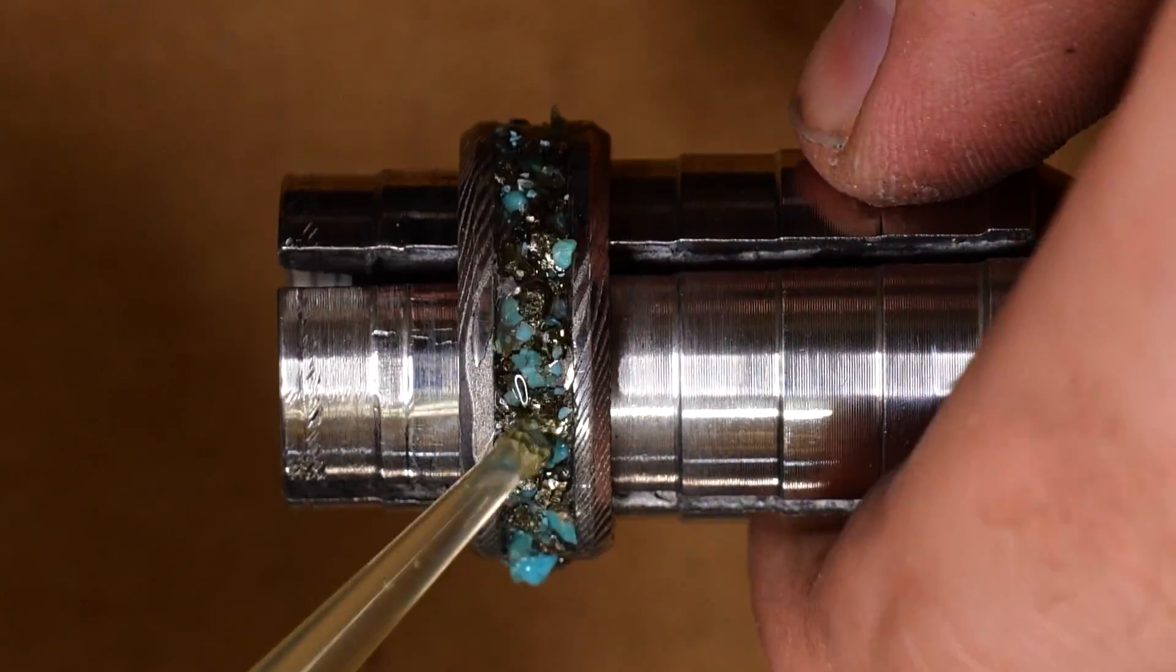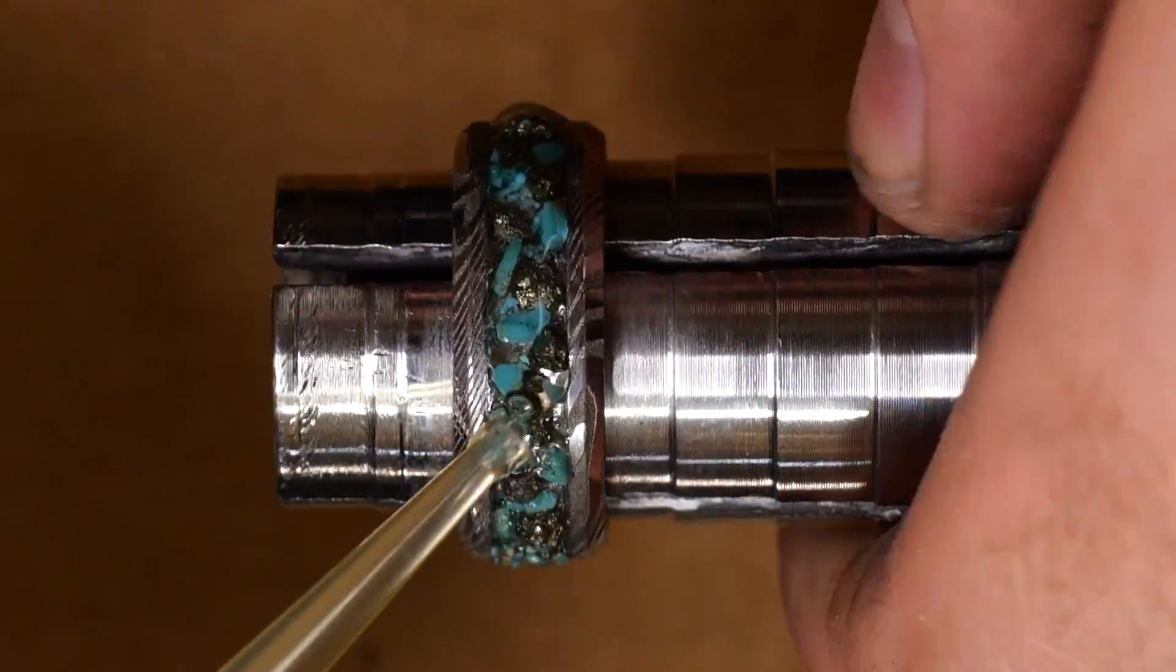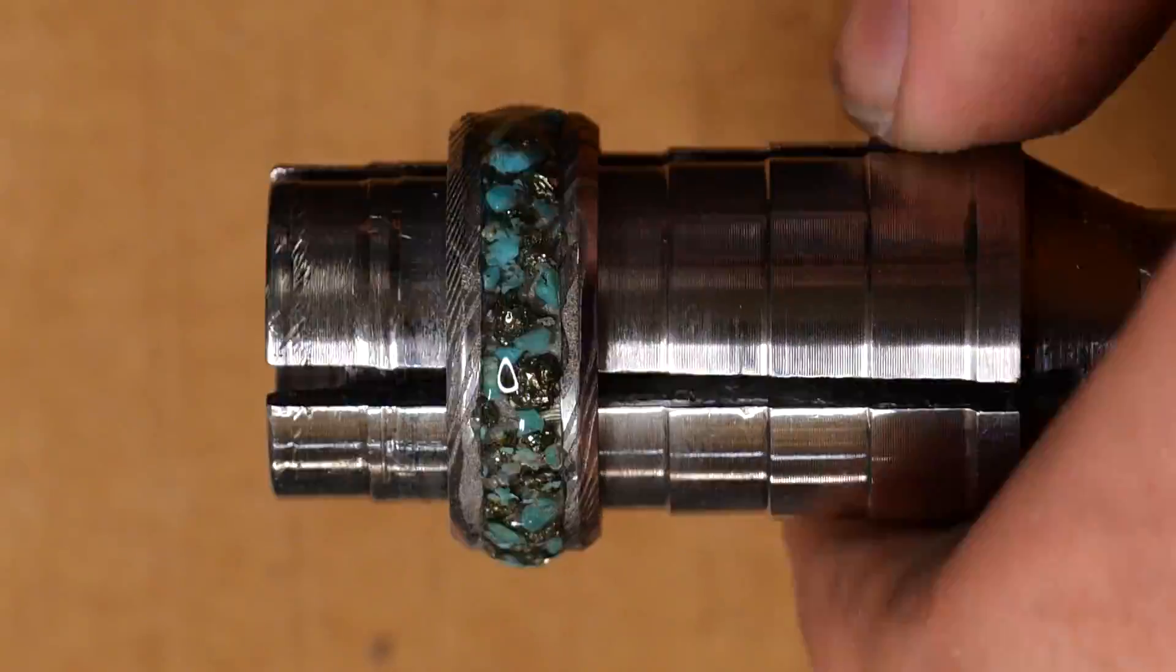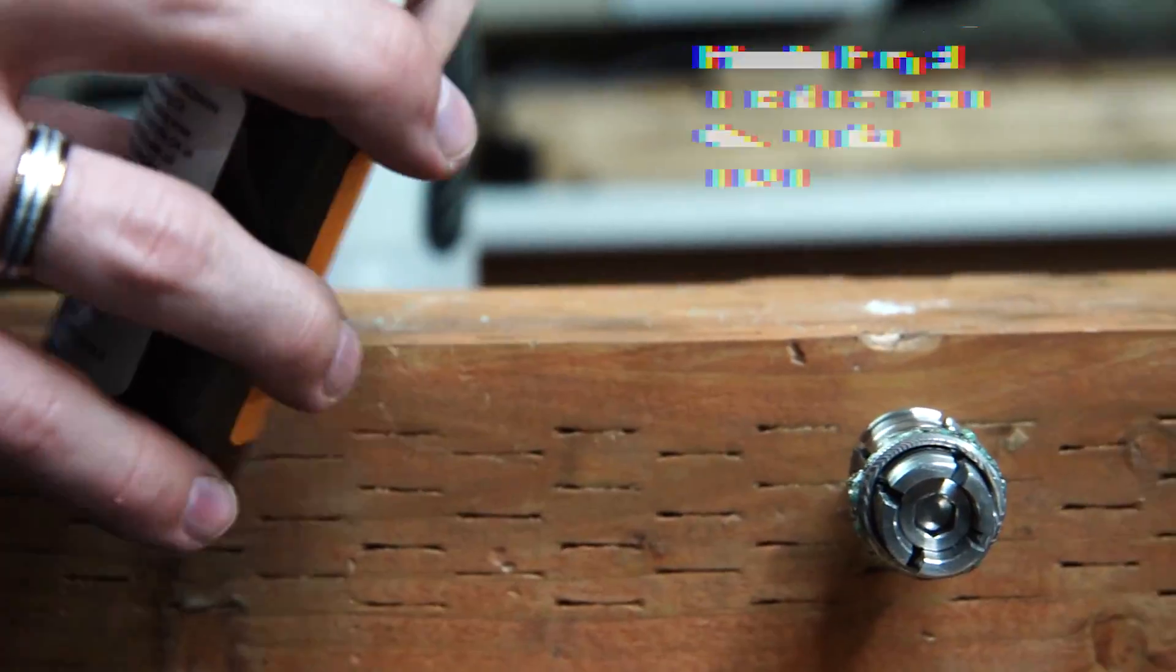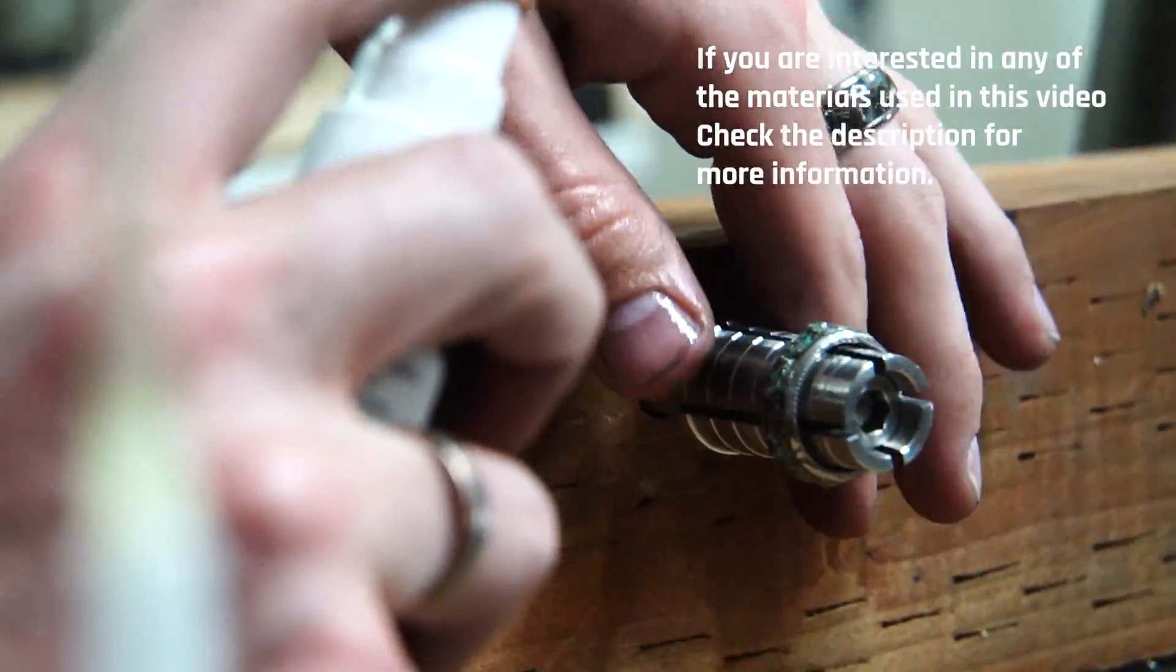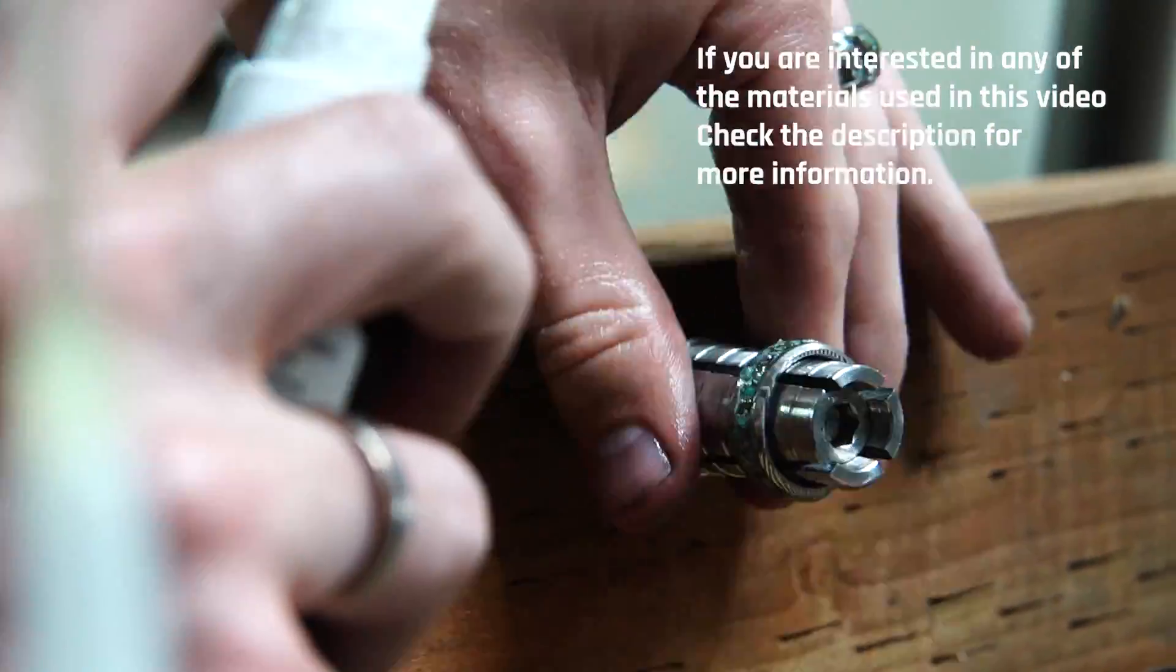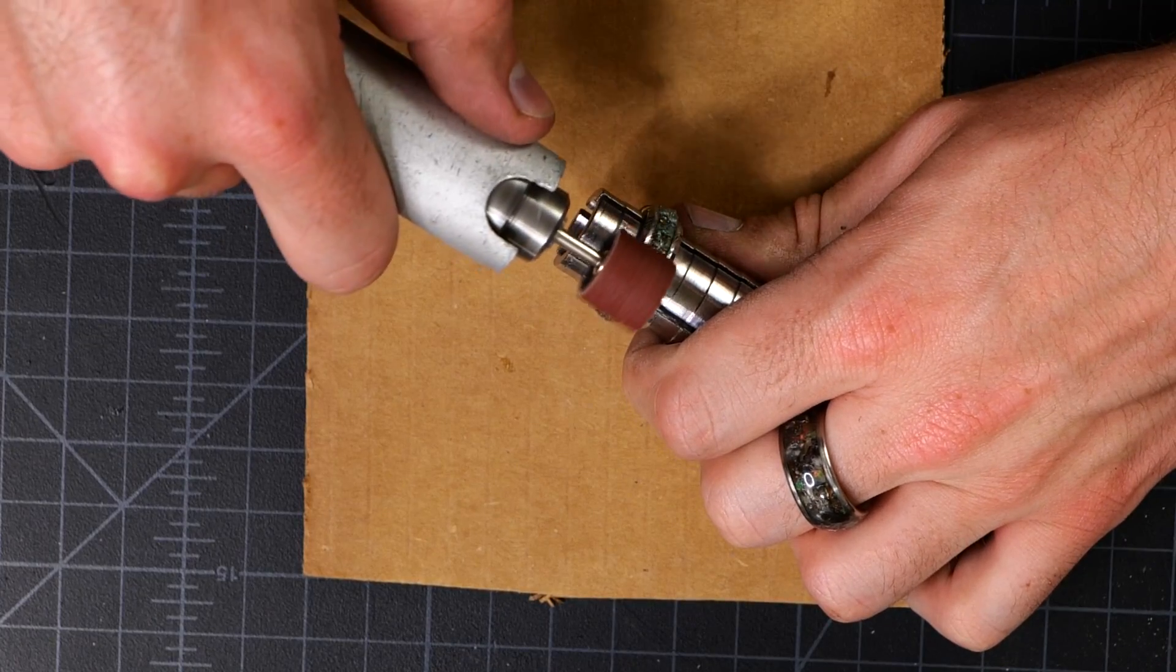Once I've got everything in place, I go around the whole ring with two layers of medium CA adhesive that fills in any remaining gaps that we missed with the inlay ingredients. Then to finish it off, I hit it with some accelerator. It's going to harden the CA adhesive really quickly. It should be ready to work on in about five or 10 minutes.